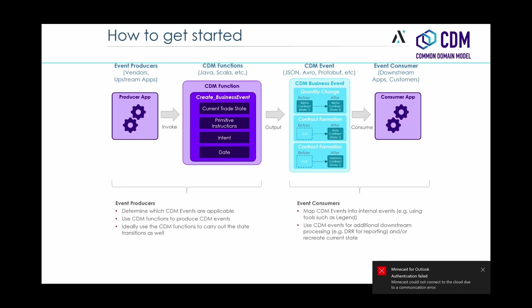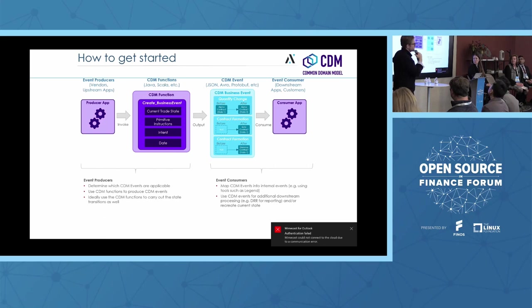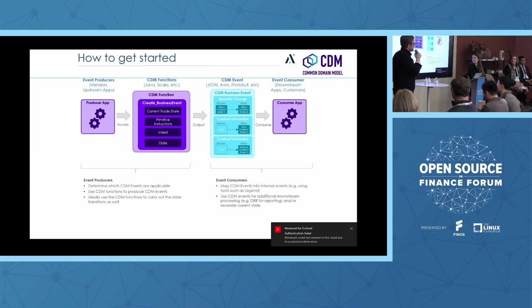From an event producer perspective, first look at what are the different events that are applicable. This is about representing state transitions of trades. Lots of different events in your own systems don't represent that — CDM is not applicable for those. But where it really matters is on those trade lifecycle events. The best way to actually represent these in CDM is using the CDM functions themselves. CDM functions are like helper functions to make sure you can create those CDM events correctly. If you try to just map field by field it's going to be challenging, but those functions are very robust, very well built out.